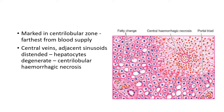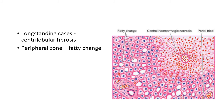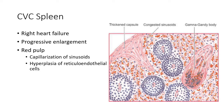In CVC liver, the central veins and adjacent sinusoids are distended and filled with blood. The hepatocytes in these areas undergo degenerative changes, eventually leading to centrilobular hemorrhagic necrosis. Long-standing cases can show centrilobular fibrosis and eventually progress to cirrhosis. In the peripheral zone, which is less severely affected, the change seen is mostly only fatty change of the hepatocytes.